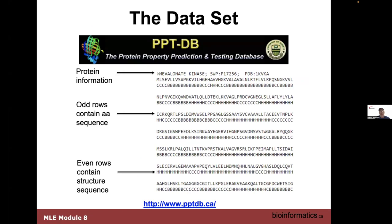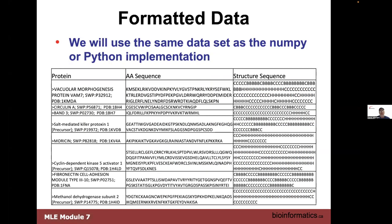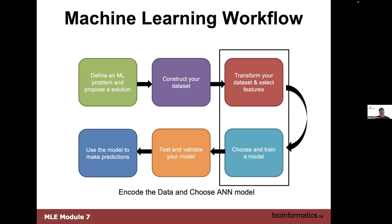We have a training set and if you recall yesterday we used PPTDB, which has a large collection of secondary structures and sequences for thousands of proteins in the protein databank. We have the same dataset as the original NumPy/pure Python version, so this is also from what you saw yesterday. What we're going to do is go through the standard machine learning workflow, which is to transform the data and train our model.